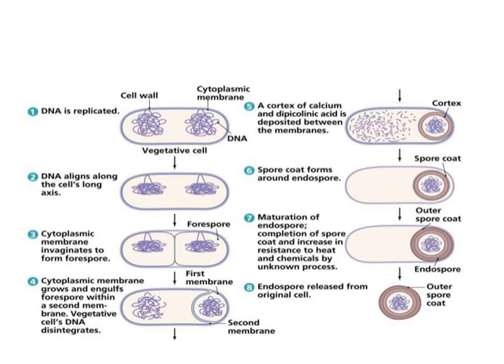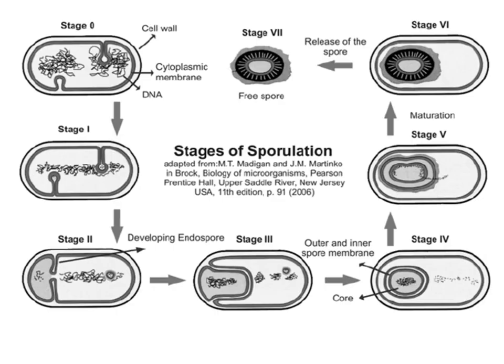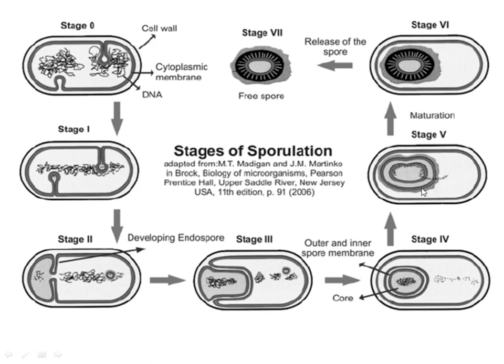The spore then starts accumulating calcium and dipicolinic acid between the membranes. The spore coat forms around the endospore, and maturation occurs — that is, completion of the spore coat and increasing resistance to heat and chemicals. The mother cell then ruptures and releases the spore into the environment, or the mother cell may retain it. This process is explained in seven stages: DNA splitting, forespore formation, engulfment, dipicolinic acid and calcium accumulation, peptidoglycan thickening, cortex formation, and spore release.